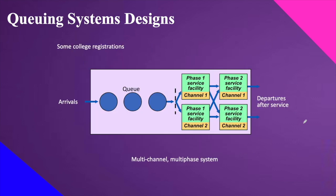The multi-channel multi-phase system is exemplified by college registration or enrollment. Arrivals queue up, then pass through multiple channels and multiple phases — sometimes going back and forth between different service facilities such as accounting and the enrollment office. Once all required services are completed, the student departs the system. Factors like course requirements and availability affect how many phases a student goes through.